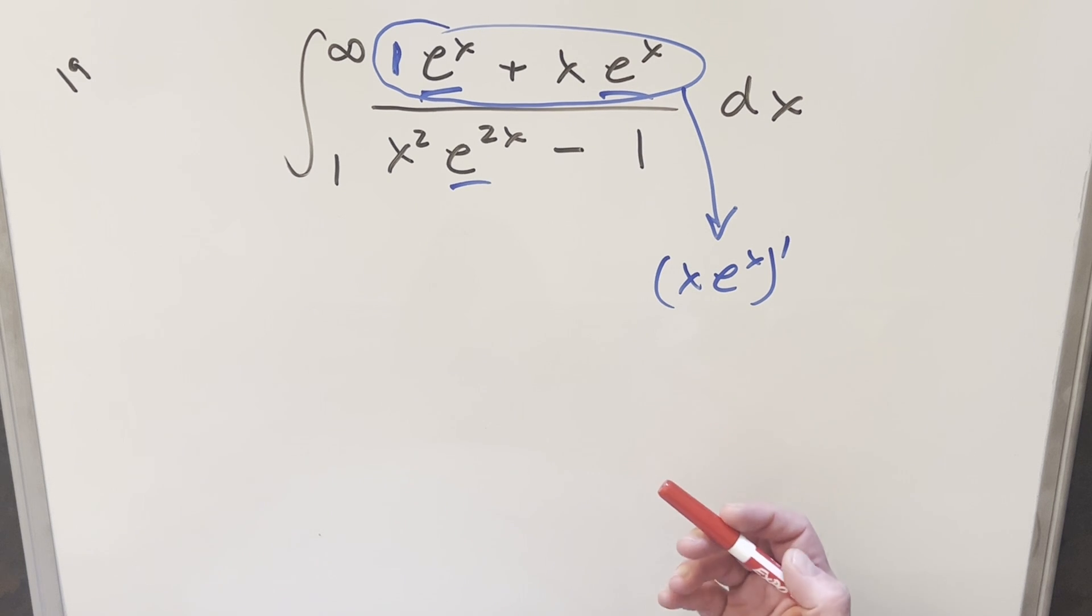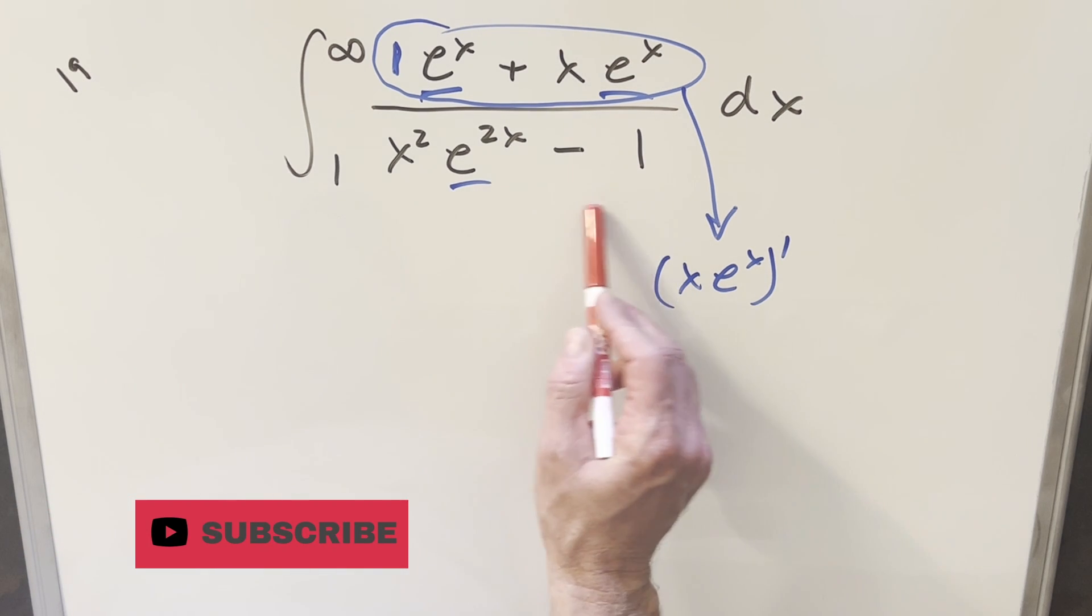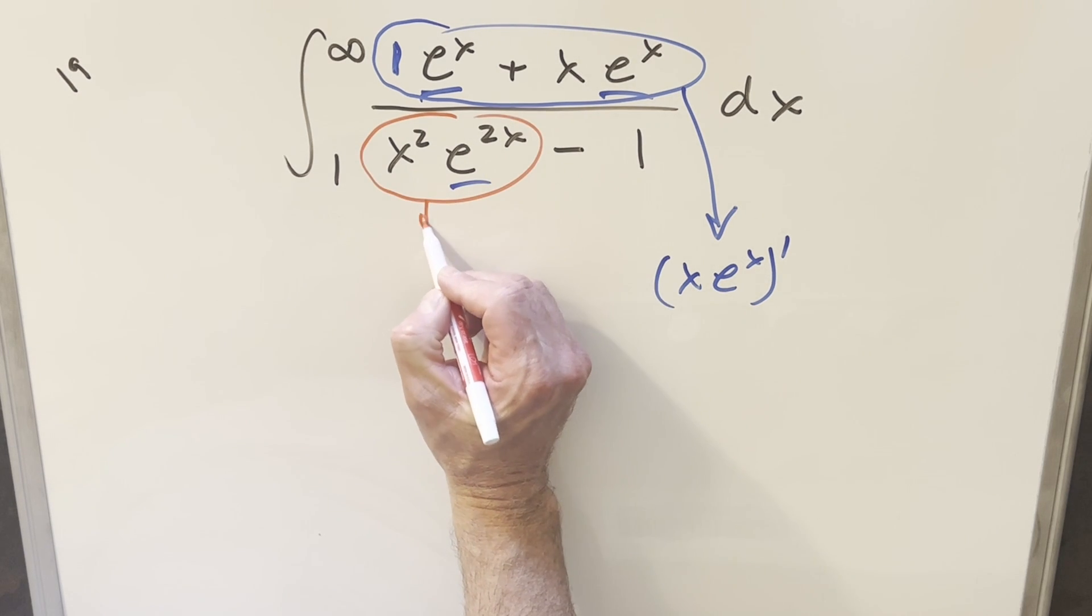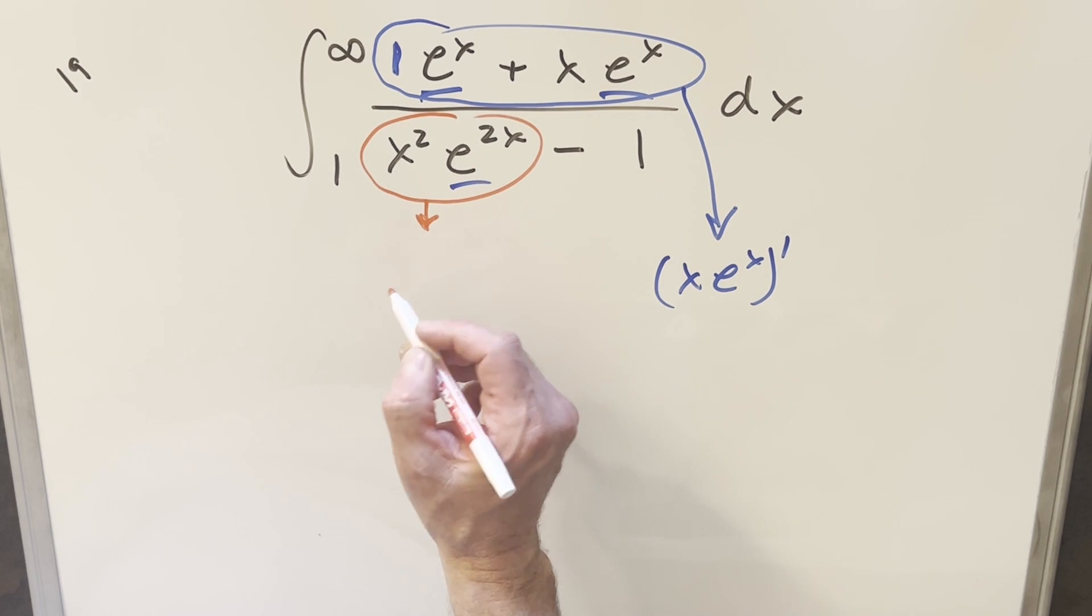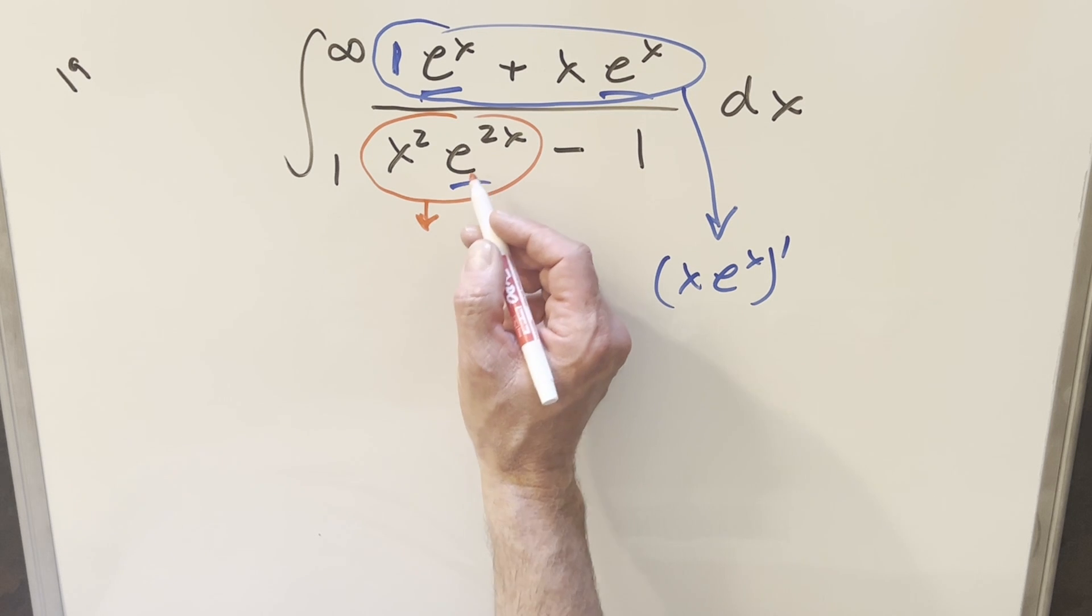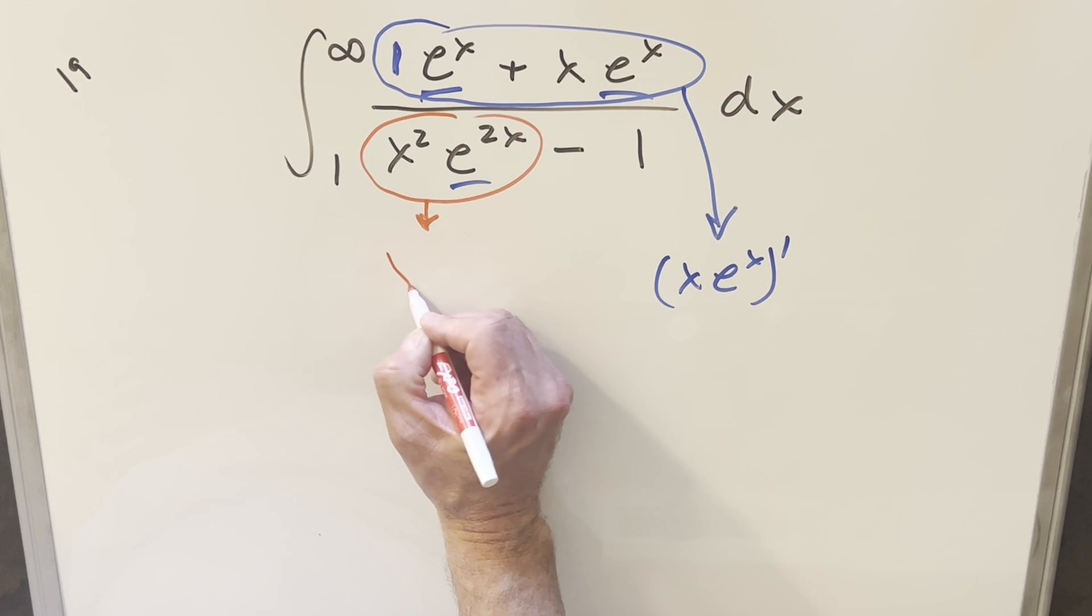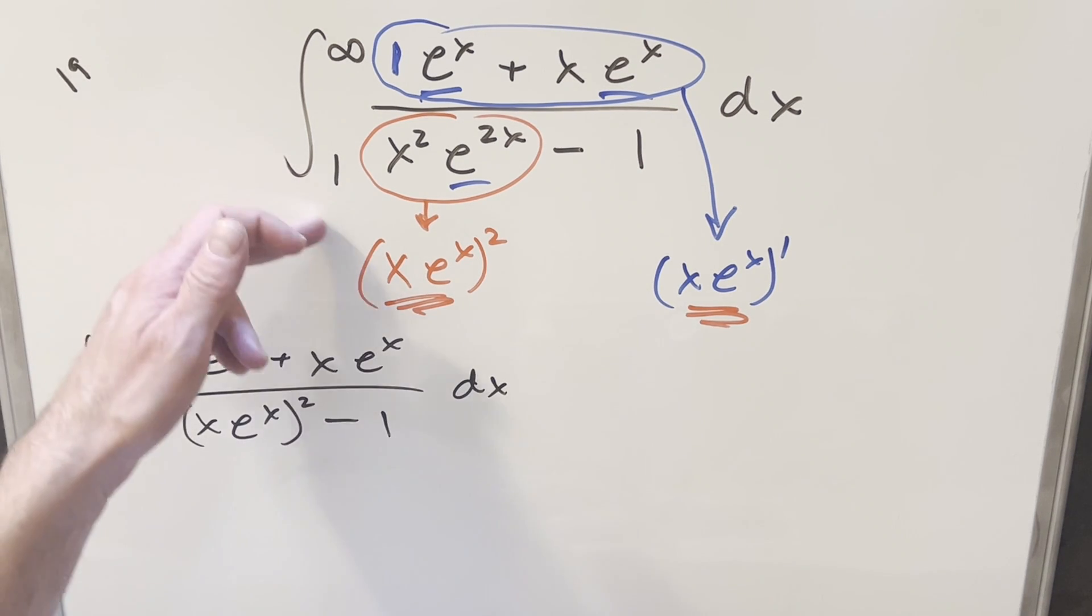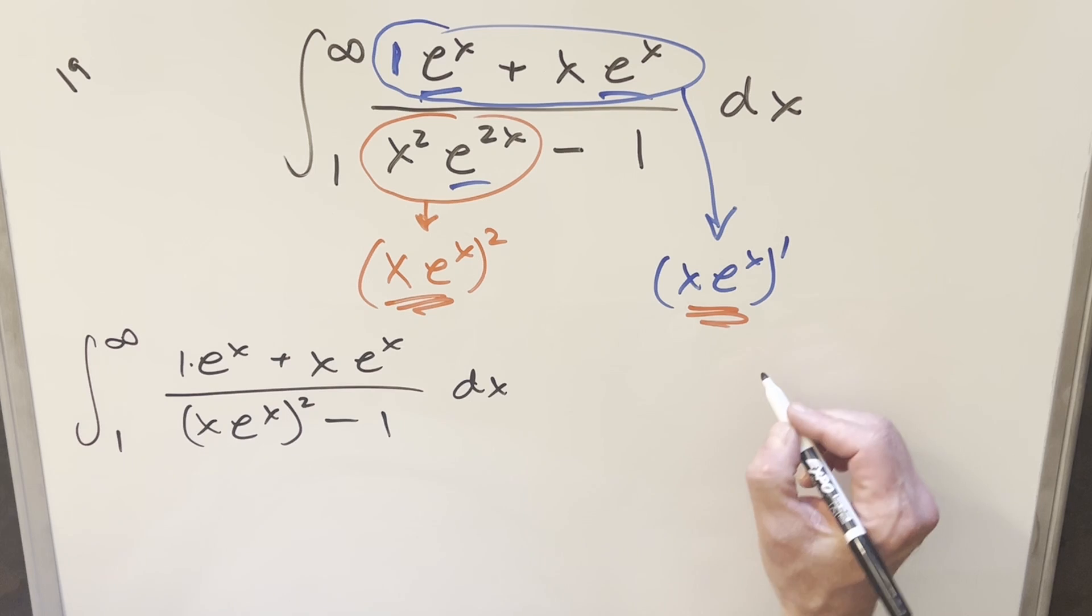So at first I was thinking maybe reverse product rule would work, but then it doesn't really work very well with this complicated denominator. But then the other thing I was noticing, just for this piece right here, I can actually rewrite this because e^(2x) is the same thing as (e^x)². So I can write this whole thing as (xe^x)² all squared. But then what that means is what we have right here is the same thing we have right here, and so it makes me think a u-substitution is going to work. So now that I have this rewritten in this form using this right here, let's go ahead with this substitution.